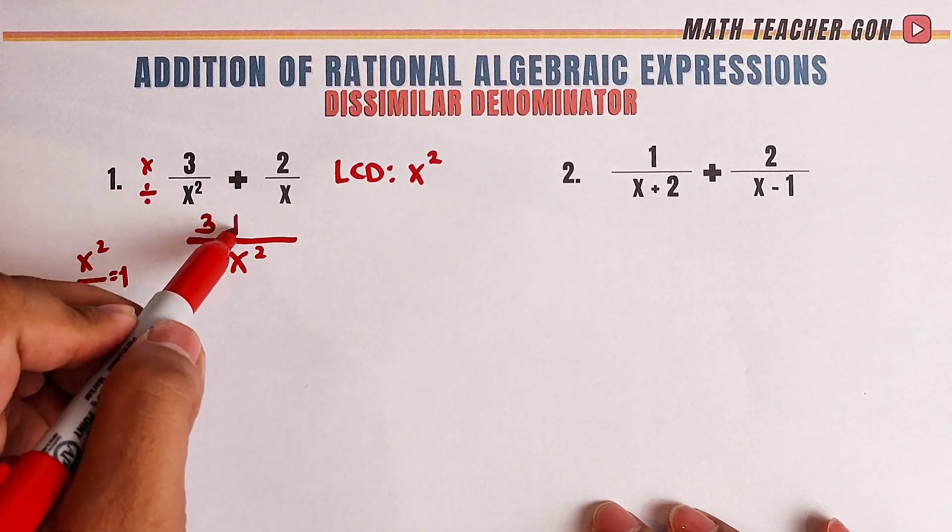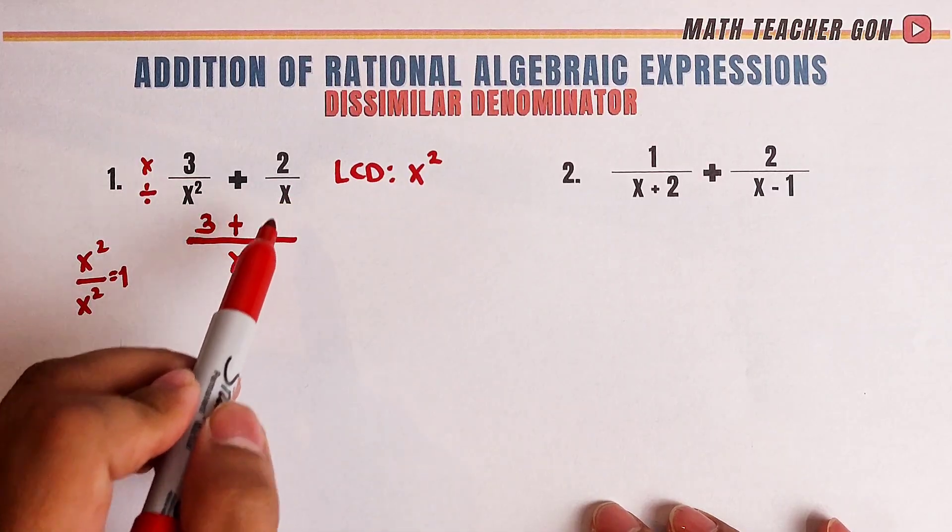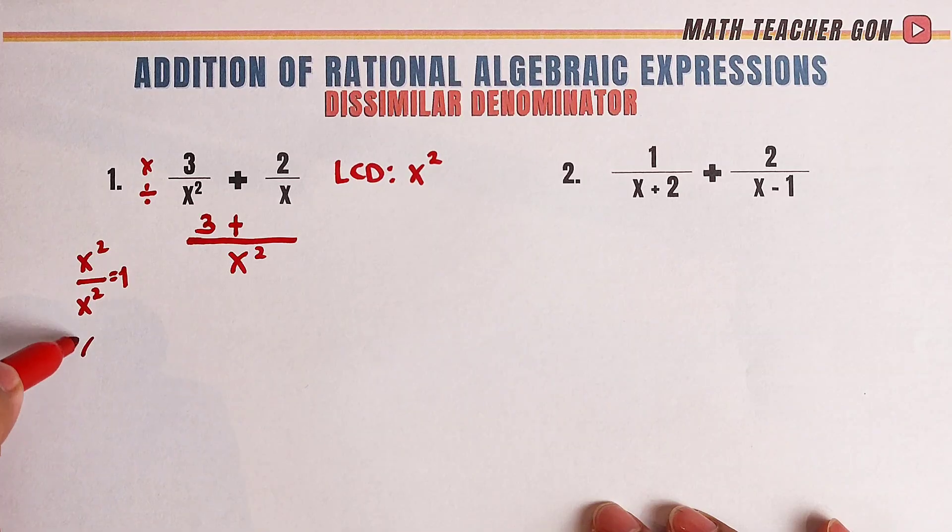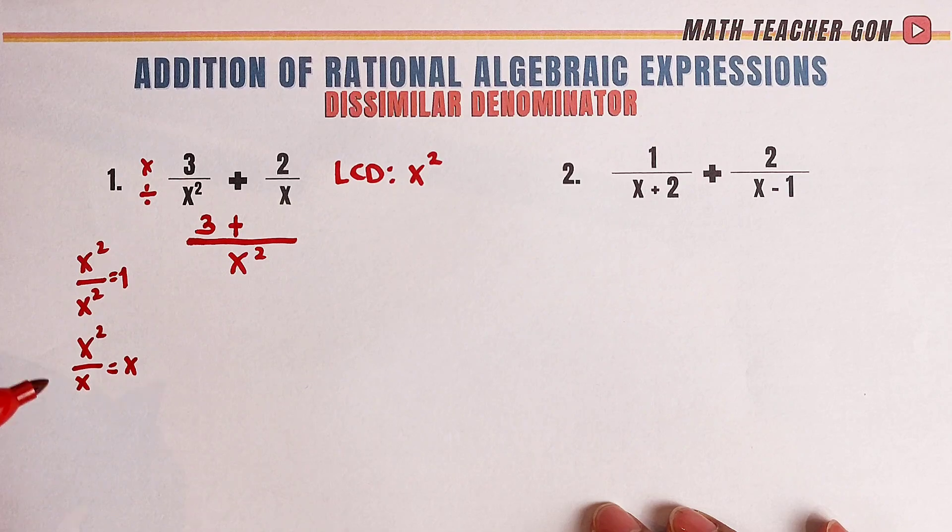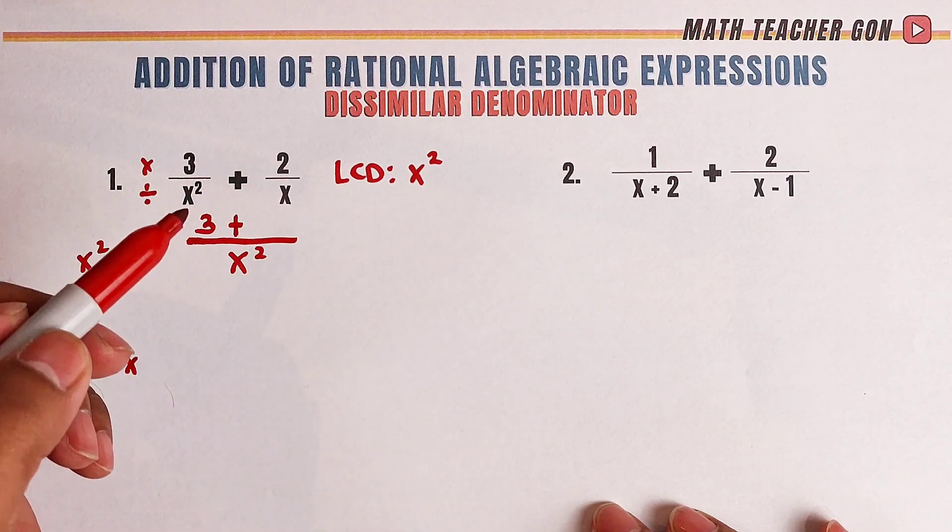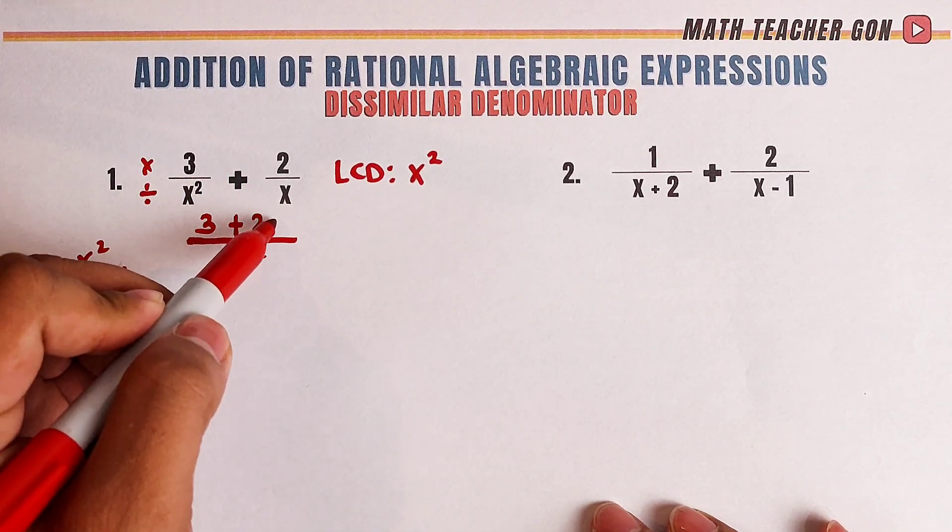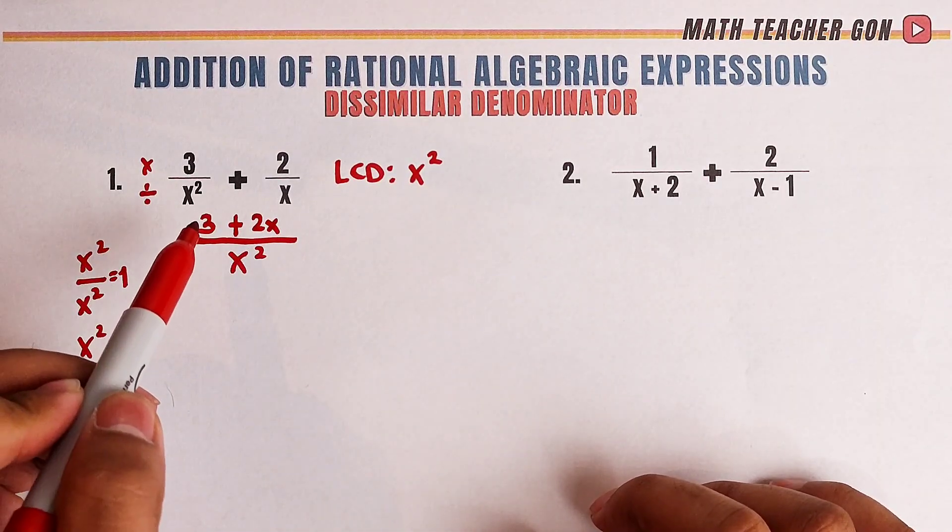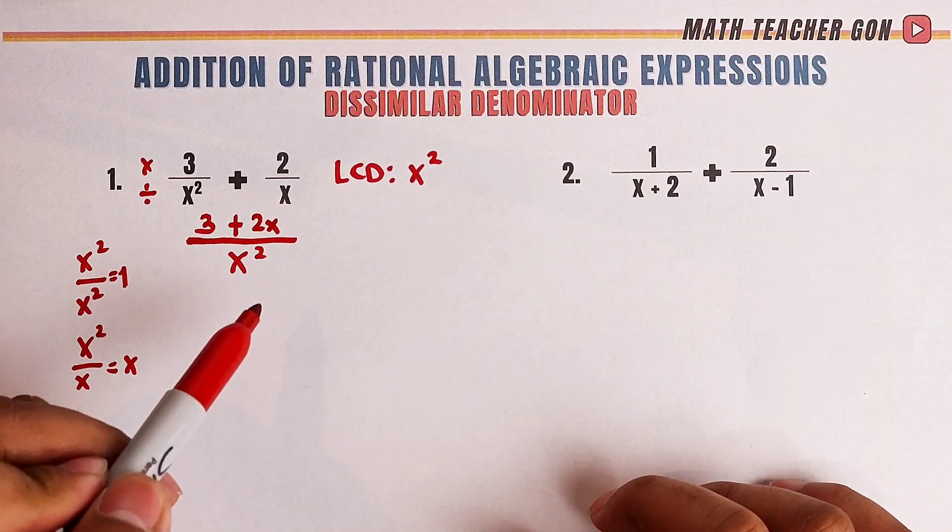Then plus, and here, the second fraction, we have x squared divided by x. That would be x only. And then multiply it by 2 again. The correct answer is 2x. So as you can see guys, what we have now is the numerator, 3 plus 2x over x squared.